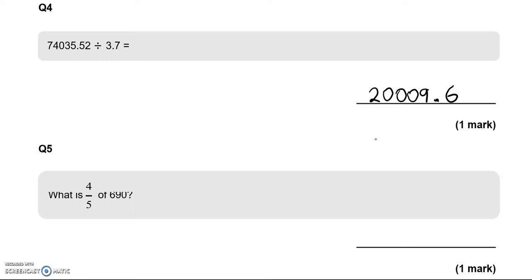Fifth question is asking, what is 4 fifths of 690? As we can use a calculator, what we can do is just do 4 fifths, 4 divided by 5, times 690. And that should give us the answer. Or 690 divided by 5 times 4. And that is 552.